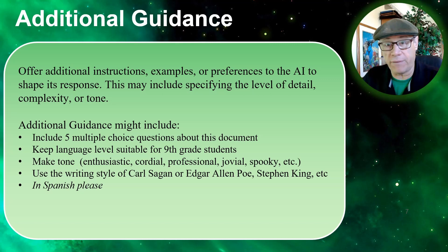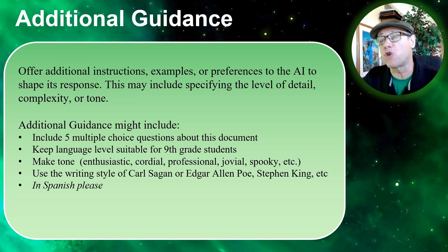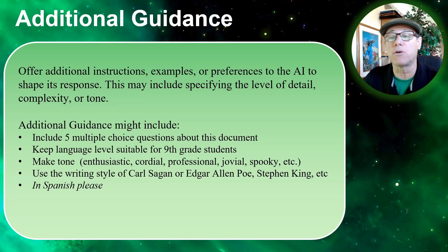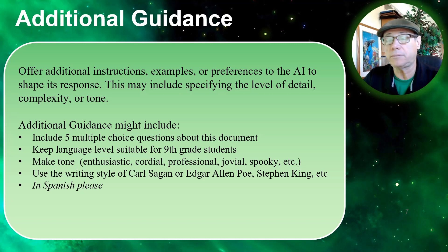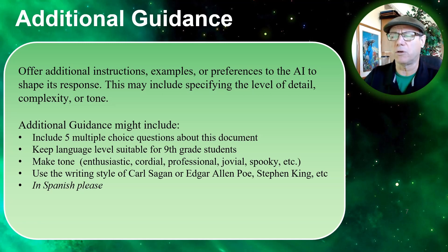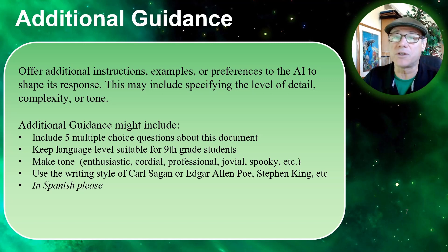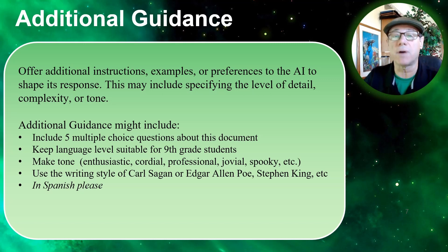Now the last part of a prompt that I use is what I call the additional guidance — instructions, examples, preferences. This may include specifying detail, complexity, or tone. For example, some of the things you might use as additional guidance are: include five multiple choice questions about this document; keep the language level suitable for ninth grade students; make the tone enthusiastic, cordial, professional, jovial, or spooky. What I also use often: use the writing style of Carl Sagan, or maybe Edgar Allan Poe, or Stephen King — when you want to add a little flair to whatever document you're putting together.